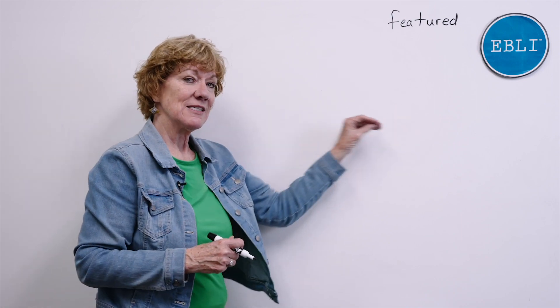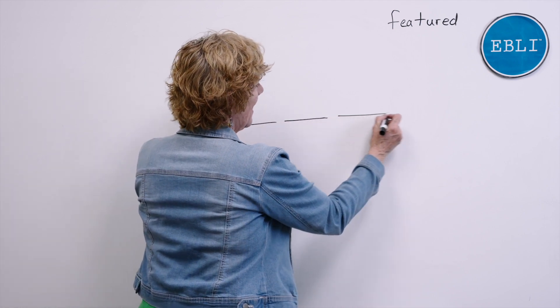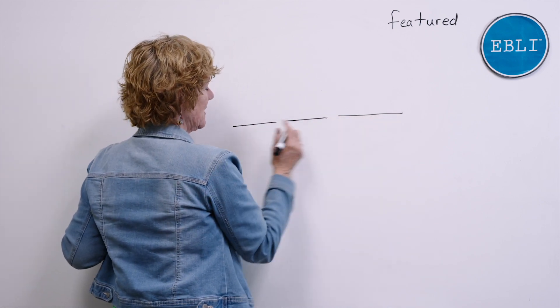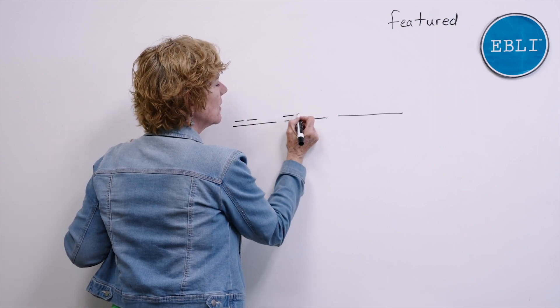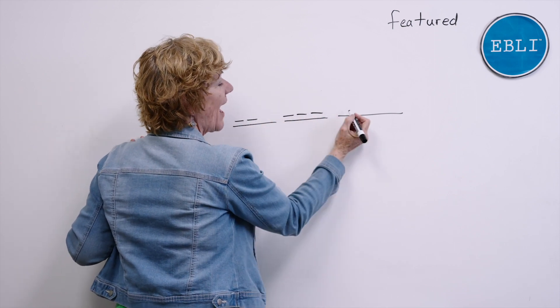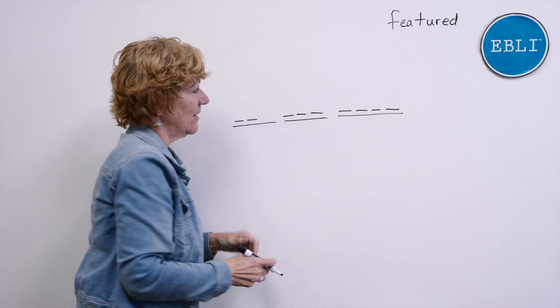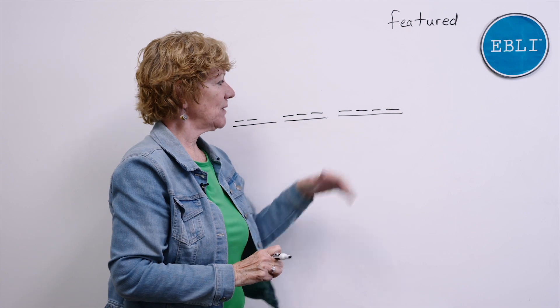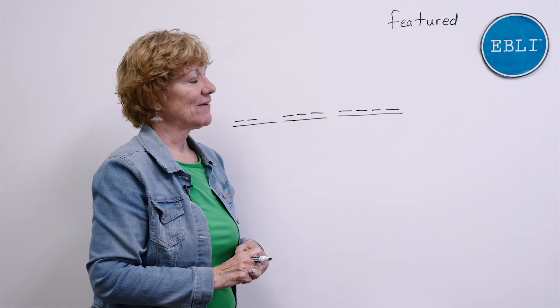So we're going to do influenced. So what are our syllables? Influenced. Sounds in in. I. N. Flu. F. L. U. Influenced. A. N. S. D. All right. You've got your placeholders there. Now say the sounds as you write influenced. Say every single sound.